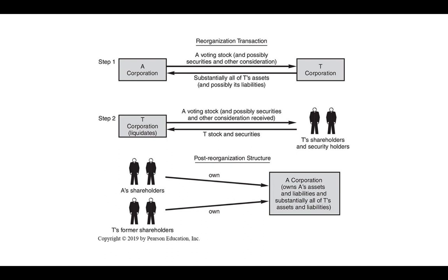In a Type C, we have corporation A wanting to acquire T. A is going to transfer voting stock — remember it has to be at least 80% — and possibly securities and other consideration to T. T is going to transfer substantially all of its assets (that's the 70/90% test) back to A. Then T distributes that A voting stock and anything else it received to its shareholders, those shareholders transfer back the T stock and securities, and T liquidates. After that, A owns its own assets and liabilities plus substantially all of T's assets and liabilities, and it is owned by A shareholders and T's former shareholders.